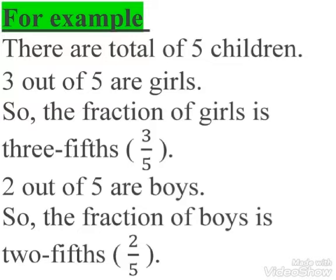For example, there are a total of 5 children. 3 out of 5 are girls, so the fraction of girls is 3 upon 5. 2 out of 5 are boys, so the fraction of boys is 2 upon 5.